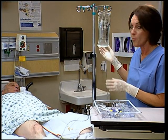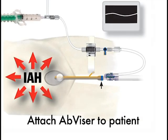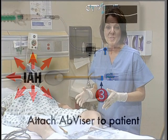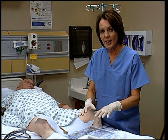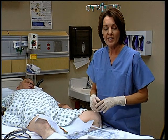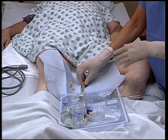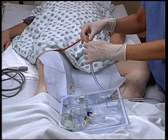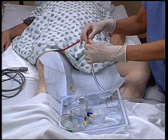Note that no pressure bag is required for intra-abdominal pressure monitoring. It's now time to attach the AbVisor to the patient. Put the AbVisor tray with all the contents onto the bed between the patient's legs. Disconnect the Foley from the drain bag and hold both exposed tubes upright to prevent urine from leaking onto the bed.